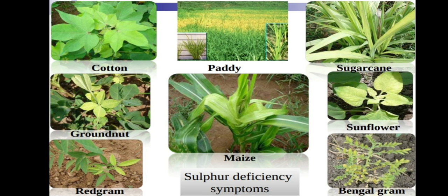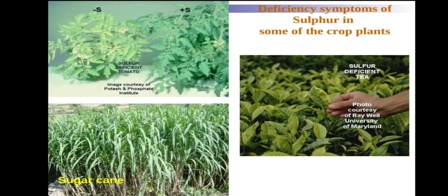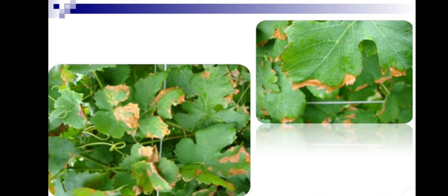Sulfur deficiency symptoms can be seen in cotton and paddy as pale yellow color in the younger leaves — similar to nitrogen but on younger leaves. In maize, bengal gram, tomato, sugarcane, tea, and apple, pale yellowish color and necrotic tips on upper leaves are observed. In grapes, the tips of younger leaves become necrotic — death of tissues.